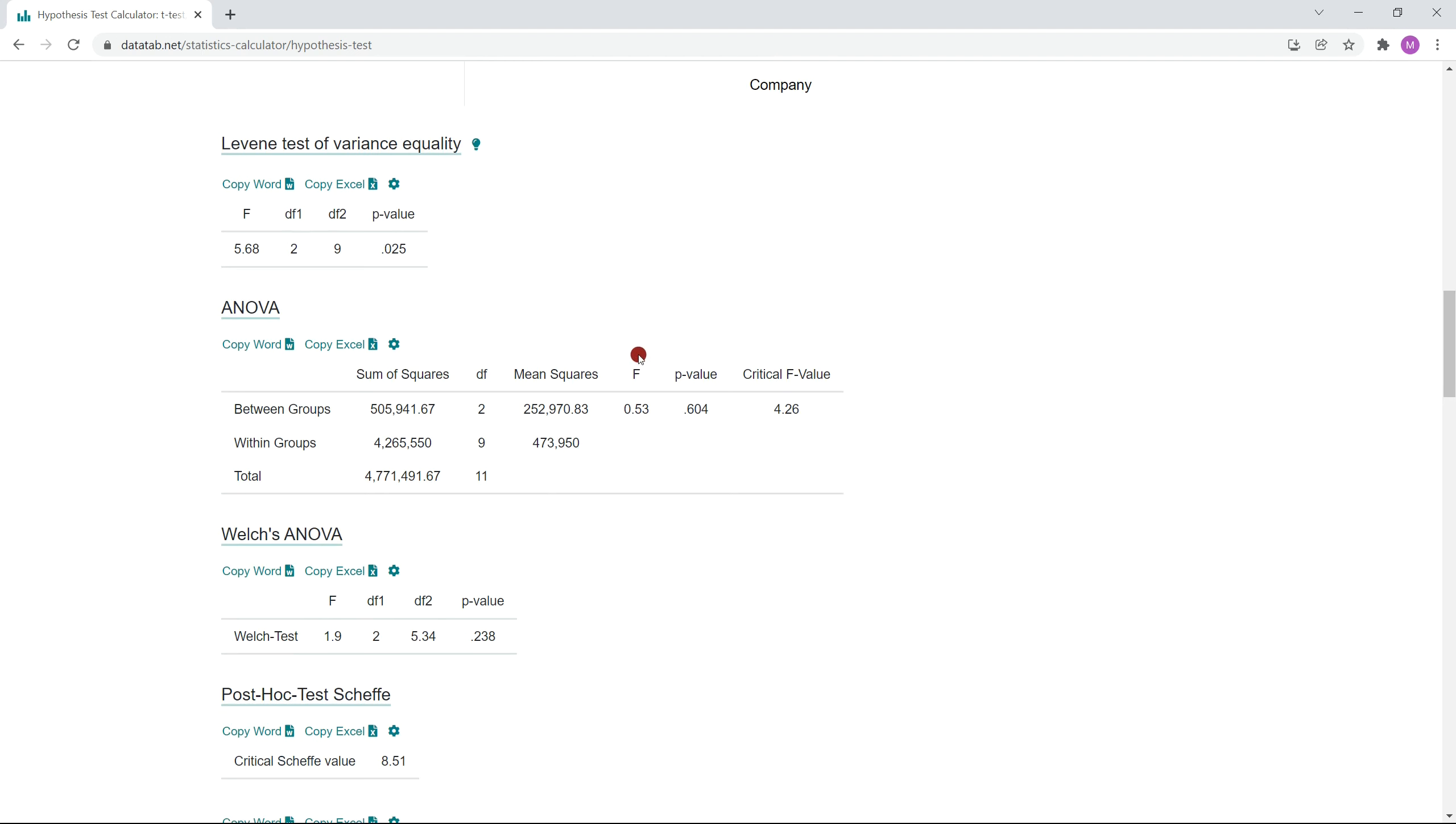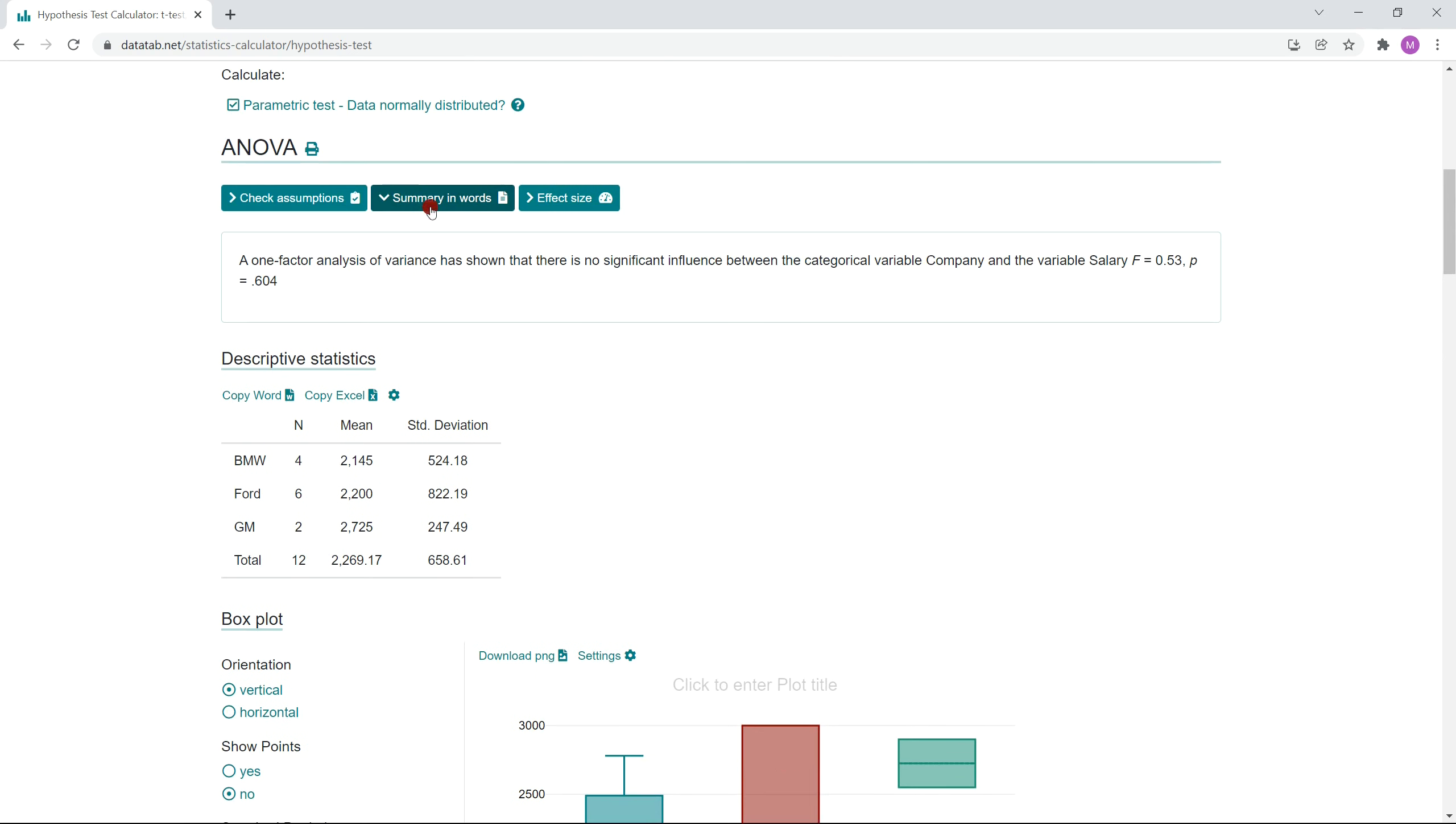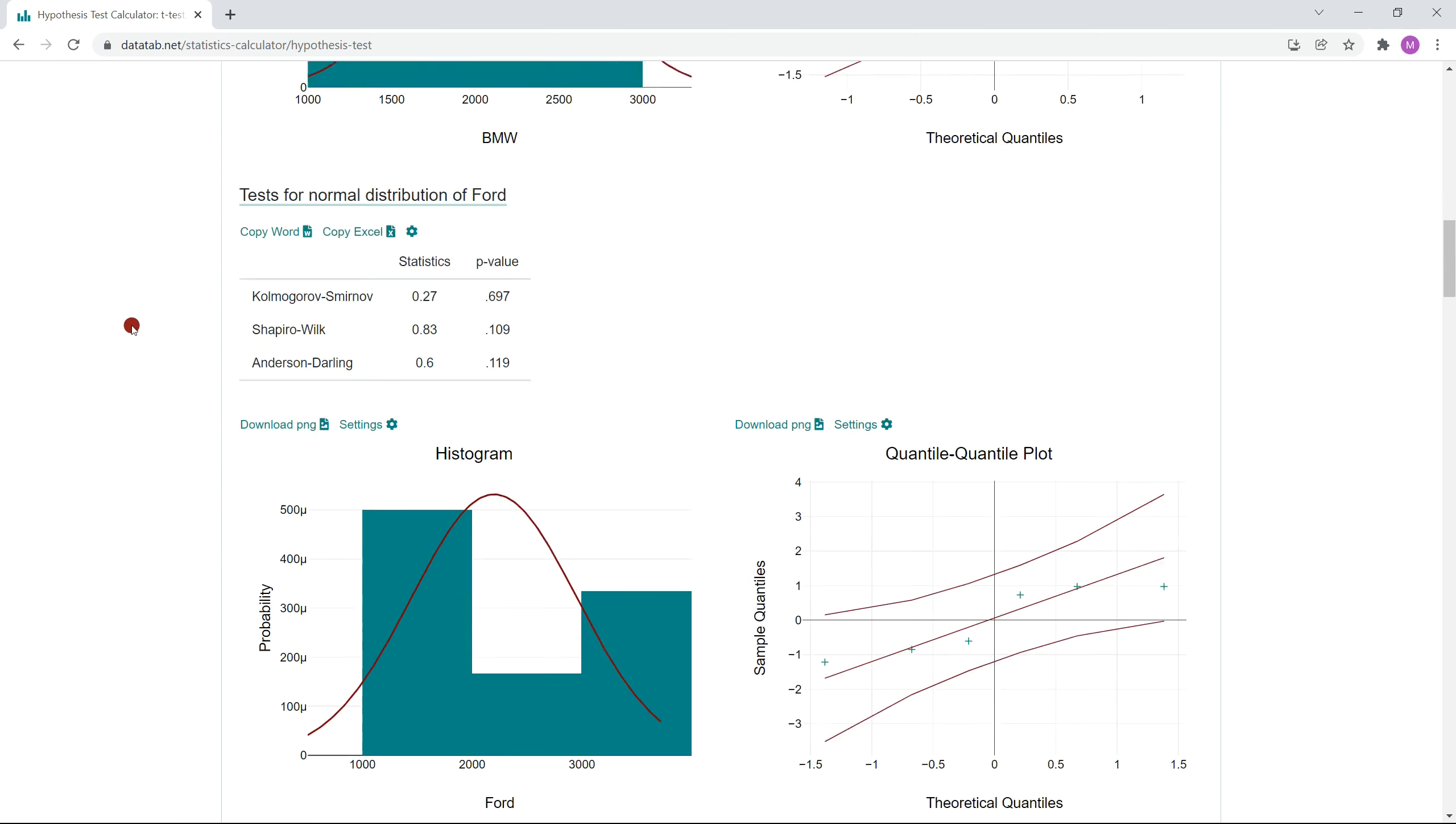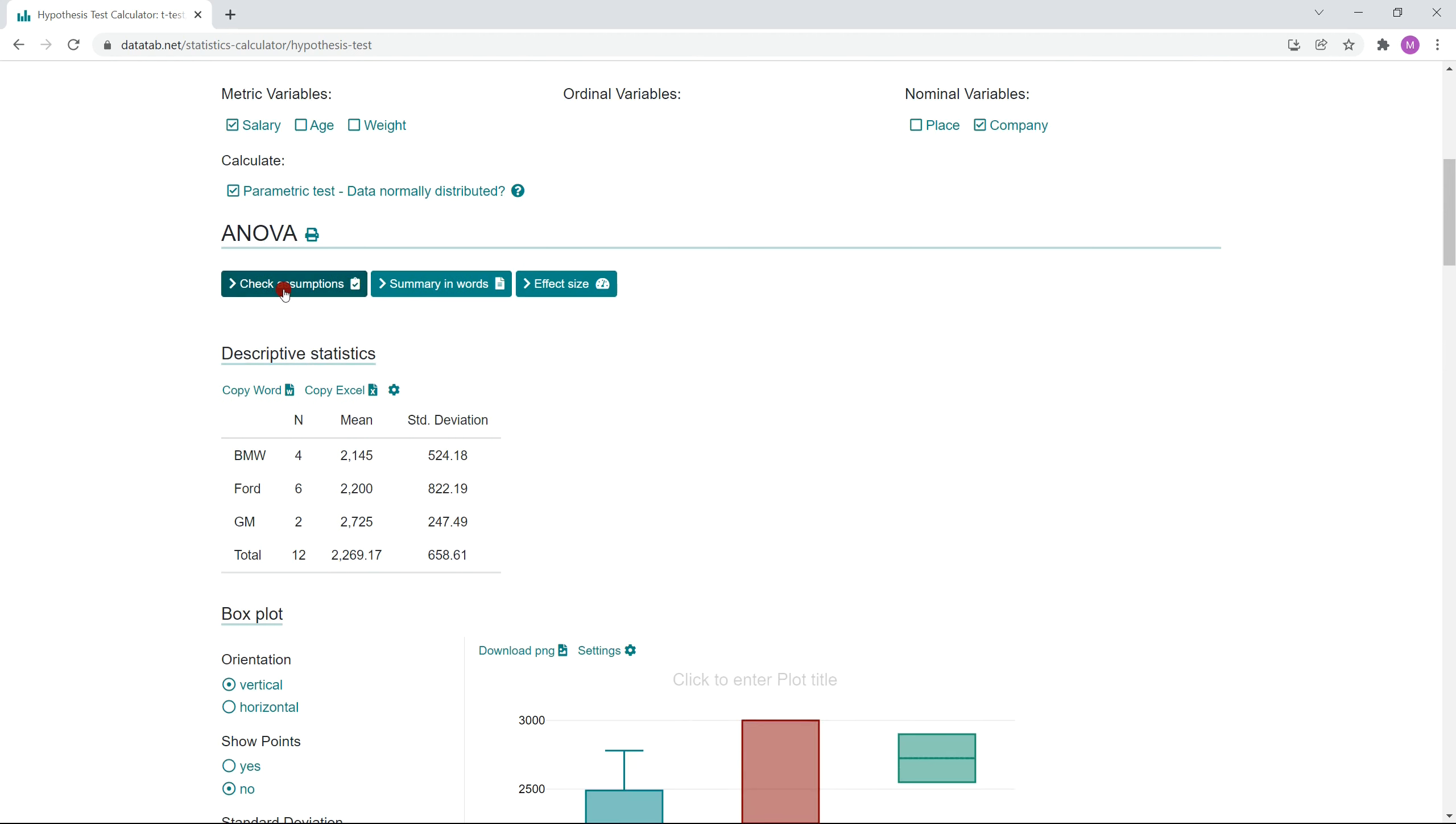Here you can read the p-value. If you don't know exactly how to interpret the p-value, just get the summary in words above. Furthermore, you can check the assumptions of the analysis of variance here. Thanks for watching and I hope you enjoyed the video.